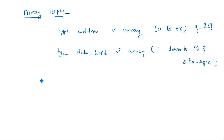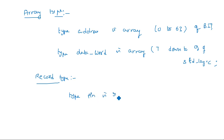Coming to record type - as I told you, a record consists of a group of different elements. An object of a record type is composed of elements of the same or different types. For example: type pin is range 0 to 10. Here pin is a data object consisting of all integer values with a range of 0 to 10, meaning 11 locations - pin(0) through pin(10) - to store information.